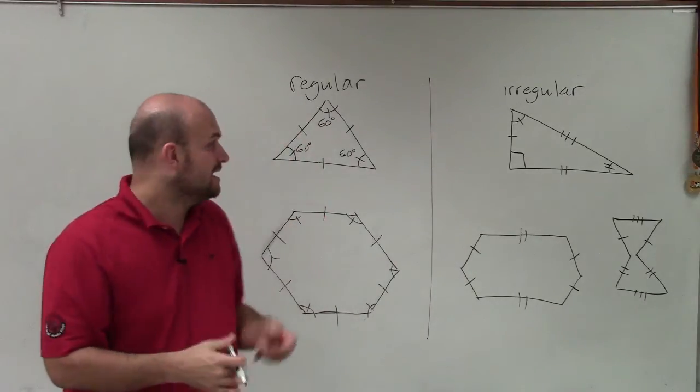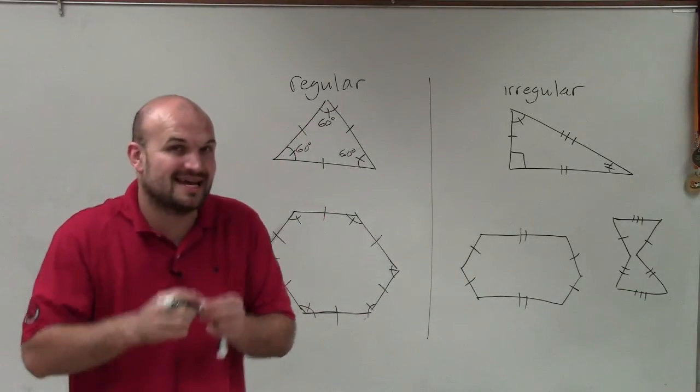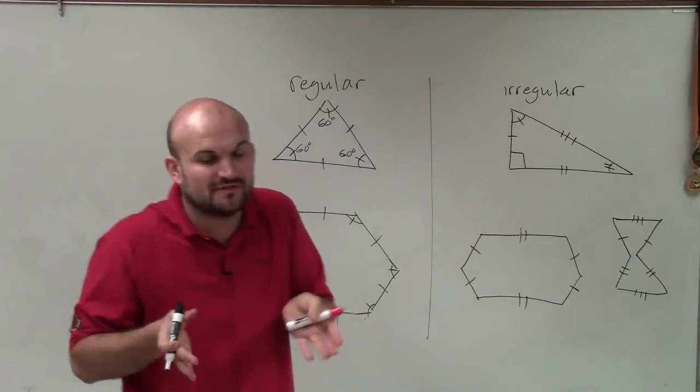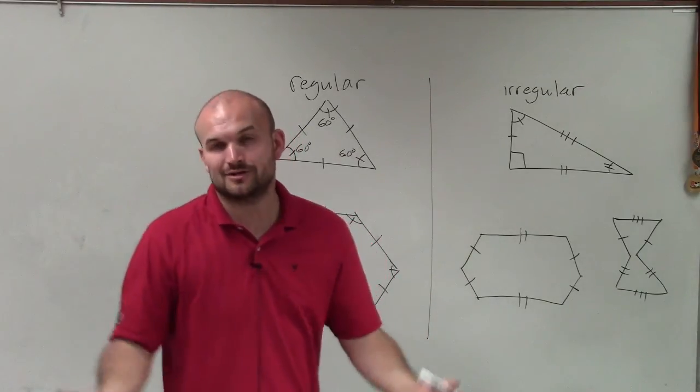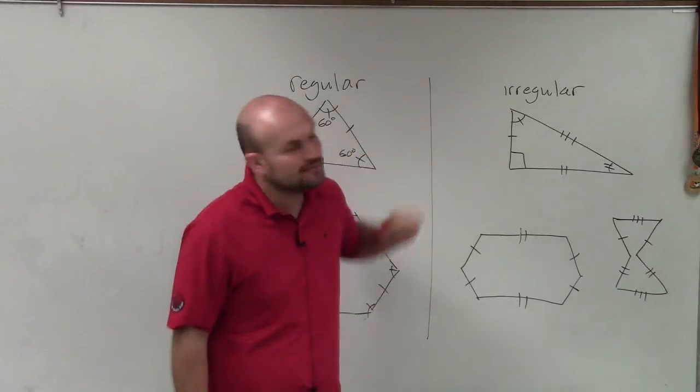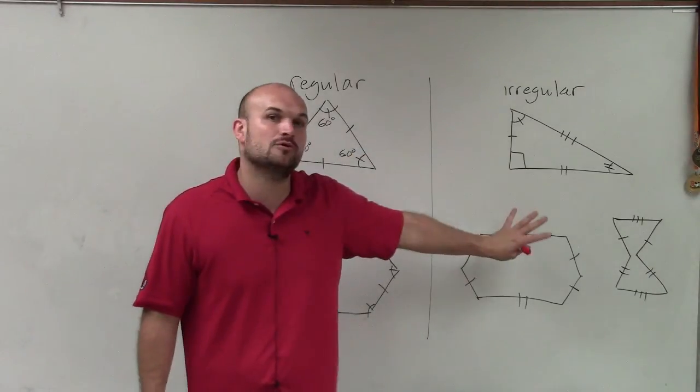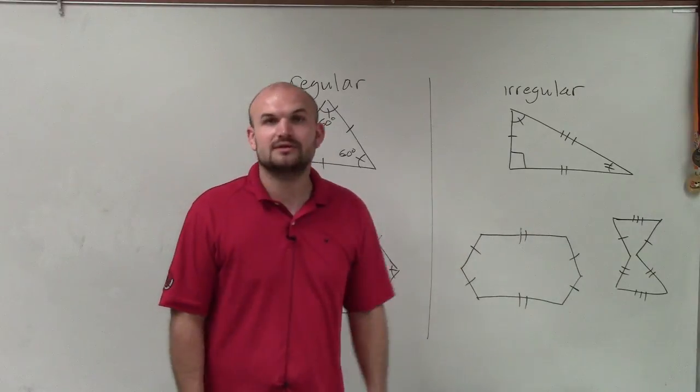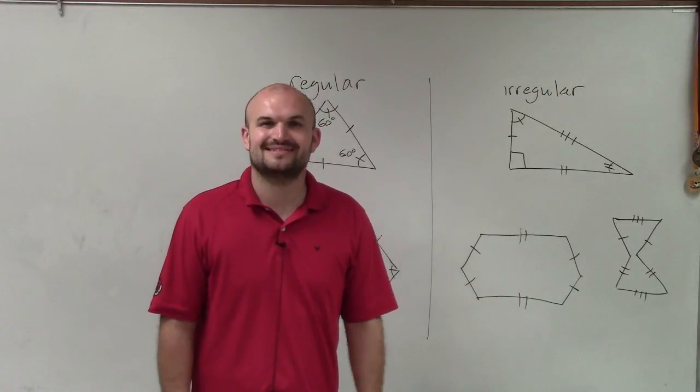And again, to summarize, regular polygons have exactly the measure of the sides are exactly the same, as well as the measure of the angles are exactly the same. So if you have one, you're going to have the other. Whereas an irregular polygon, do not have equal measures of lengths and or angles. Thanks.